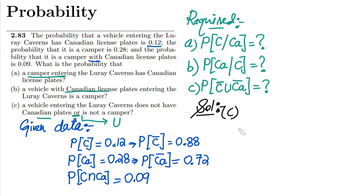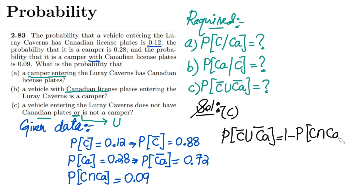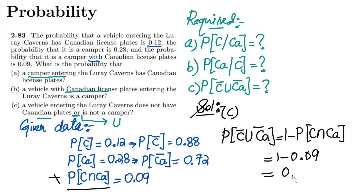Part C: we need to find P(C' ∪ CA'), the probability that a vehicle doesn't have Canadian plates or is not a camper. Using the complement formula: P(C' ∪ CA') = 1 - P(C ∩ CA) = 1 - 0.09 = 0.91. So there is a 91% chance that a vehicle entering Luray Caverns doesn't have Canadian plates or is not a camper.